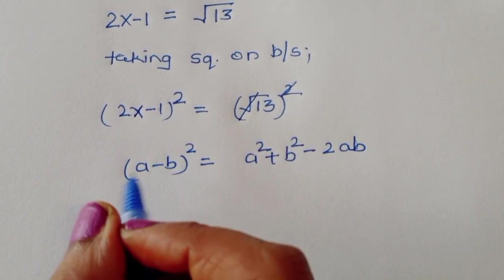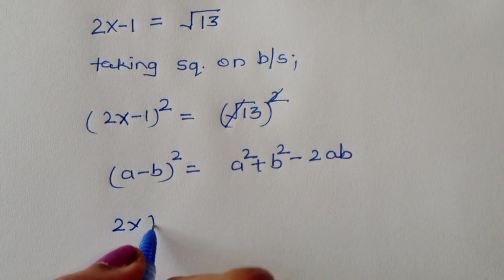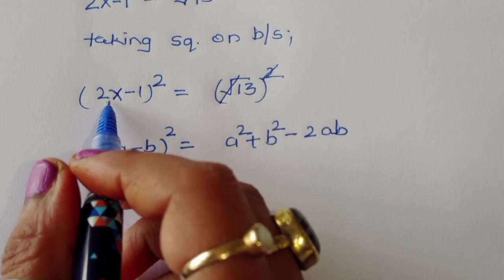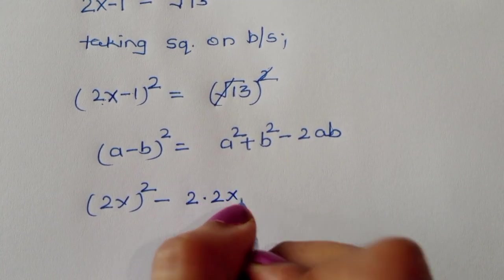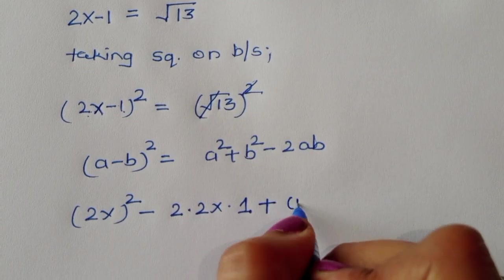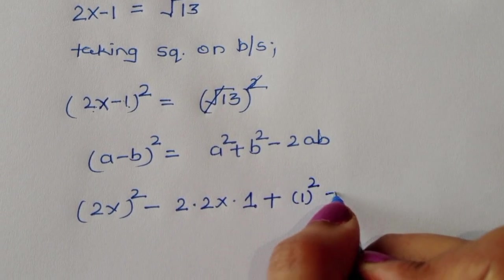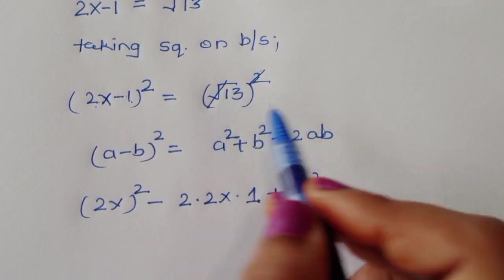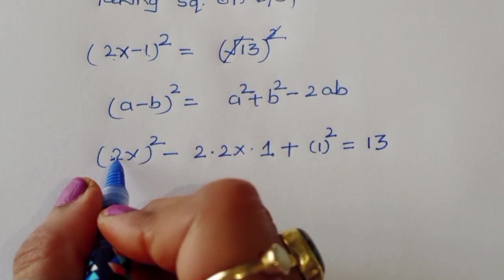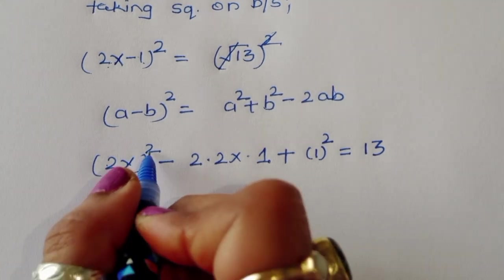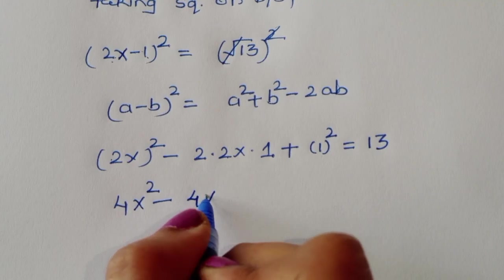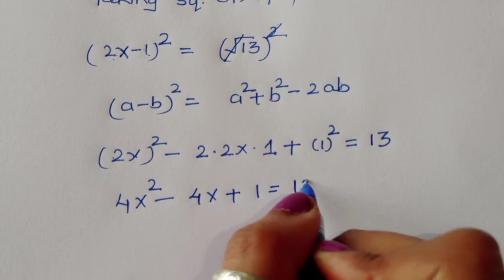Expanding (a − b)² = a² − 2ab + b²: we get (2x)² − 2·(2x)·1 + 1² = 13, which gives 4x² − 4x + 1 = 13.